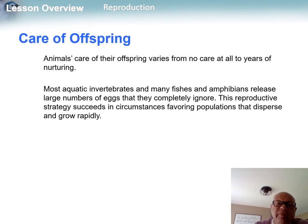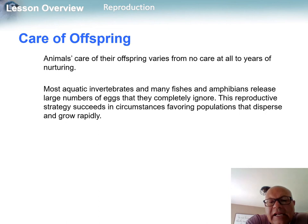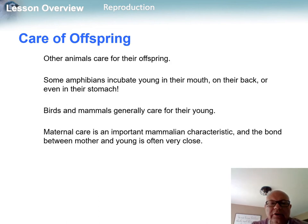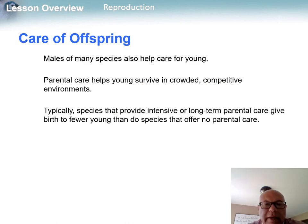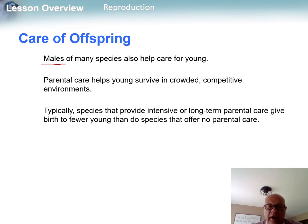When it comes to caring for offspring, there's a total gamut of differences. Sometimes a species lays its eggs, they hatch, and the parents are done. Other times there's parental care — some amphibians incubate the young in their mouth, carry them on their back, or even in their stomach. By and large, birds and mammals are the ones that care for their young the most — it's definitely a big mammalian characteristic.